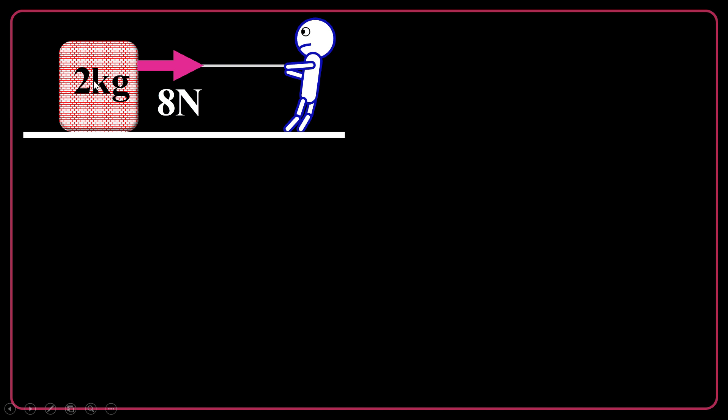Suppose that this object of mass 2 kg is acted by a net force of 8 newtons. Net force means that we are pulling the object by 8 newtons, but there is no opposing force, like air resistance, like friction, nothing.